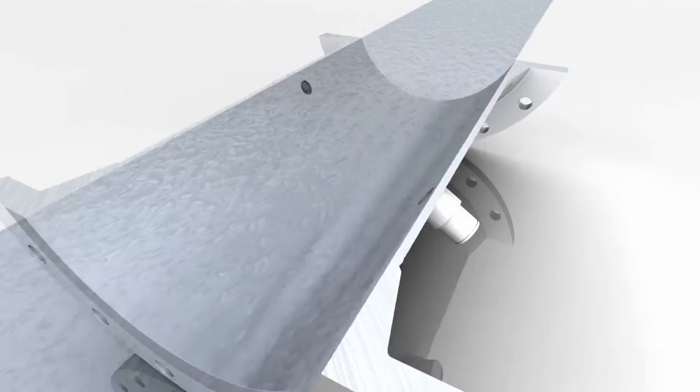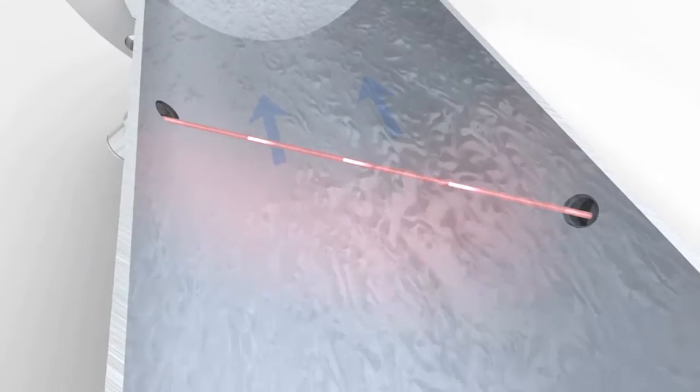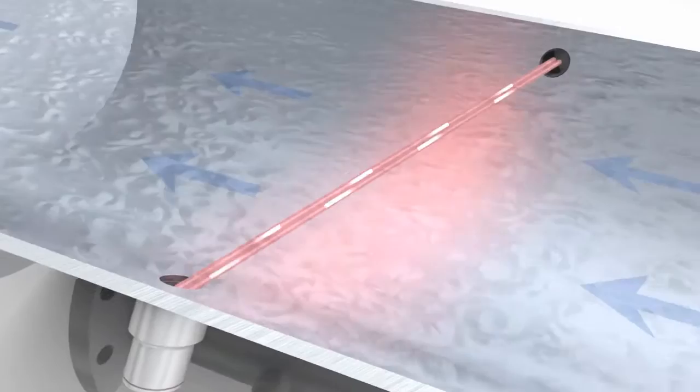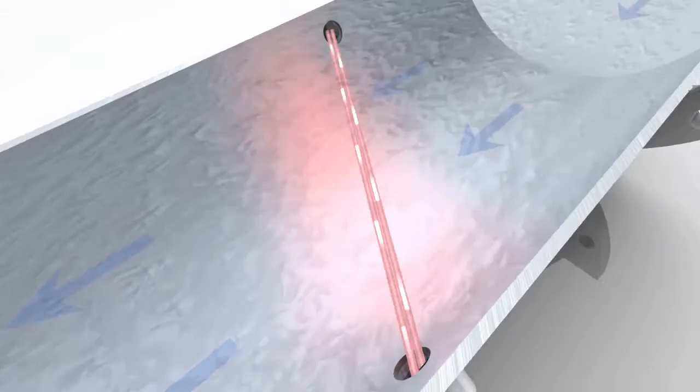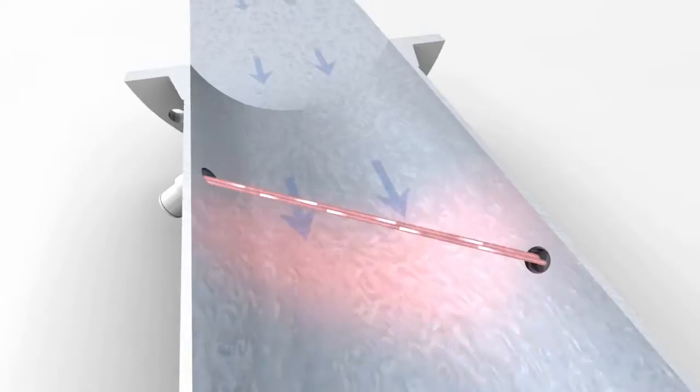Ultrasonic flow measurement is based on the differential transit time principle. A sound wave moving with the flow travels faster than the sound wave going against the flow. This difference in transit time is directly proportional to the mean flow velocity. The transit time measurement principle is not affected by liquid properties like density, pressure, temperature or viscosity.